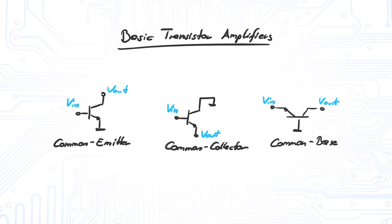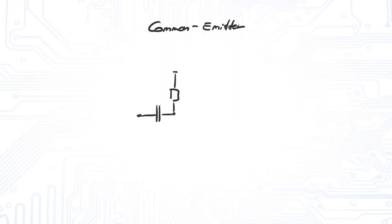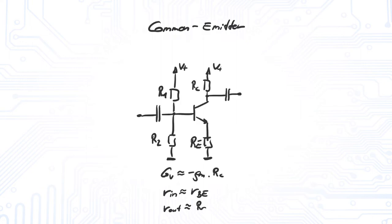The three different basic amplifiers have certain properties. The common emitter amplifier has approximately these properties. Note that the voltage gain of a common emitter amplifier is always negative.